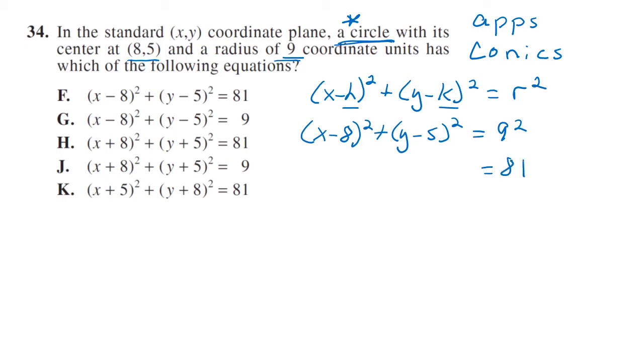We know since it equals 81 it can't be G or J. And we just have to say (x-8)² has to be choice F. The tricky part with these if you get them on ACT is just paying attention to the positives and negatives, because if this had been a negative 8 it would become (x+8)². You have to remember the formula or look it up on your calculator to make sure you're doing it right.